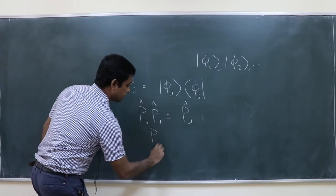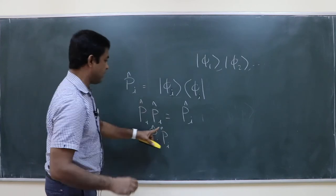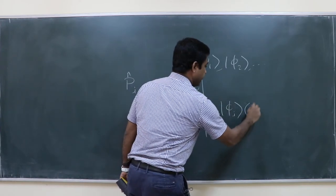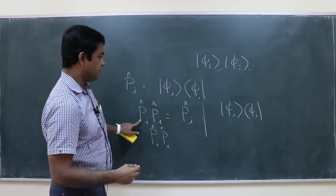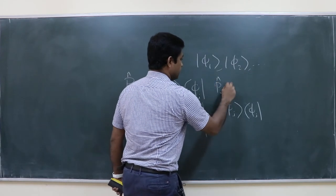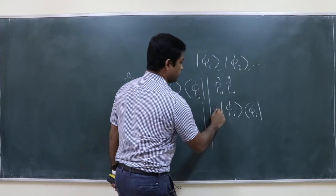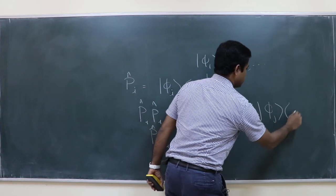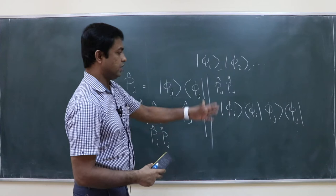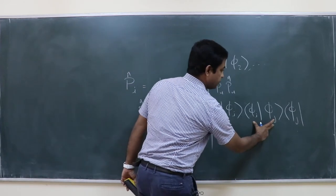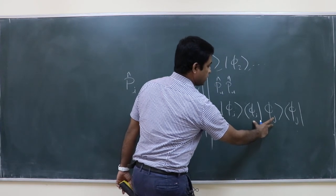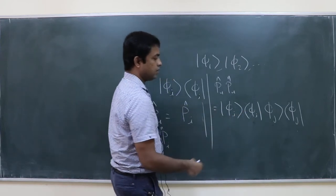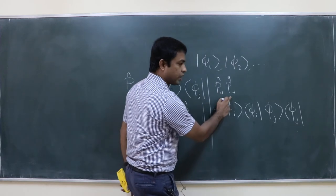What will Pi Pj be if i is not equal to j? Mathematically, Pi Pi is |φi⟩⟨φi| times |φj⟩⟨φj|. The inner product ⟨φi|φj⟩ equals δij. So when i equals j only this will survive. But there is no summation convention here — this is any individual i for a given i.